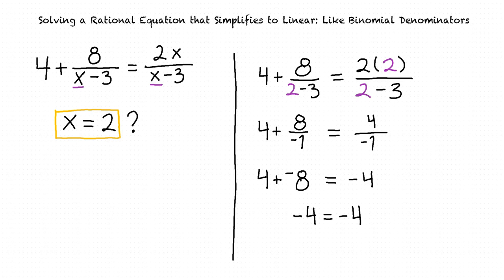If we simplify the left side of the equation, we find that negative 4 equals negative 4. Since negative 4 does equal negative 4, we know that when x takes the value 2, our original equation is true, so x equals 2 is indeed a correct solution. It's important to check our answers when dealing with rational expressions because sometimes substituting the value of x back into our equation makes the denominators of the rational expression 0, and thus it is not a valid solution.